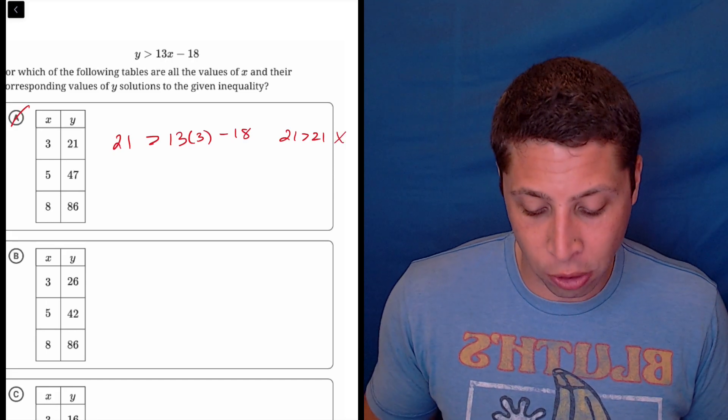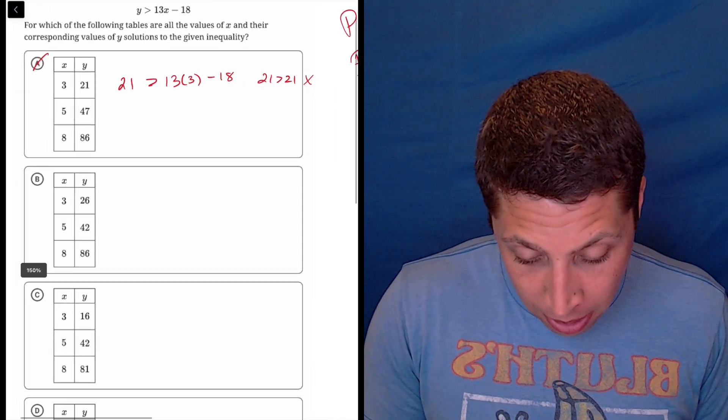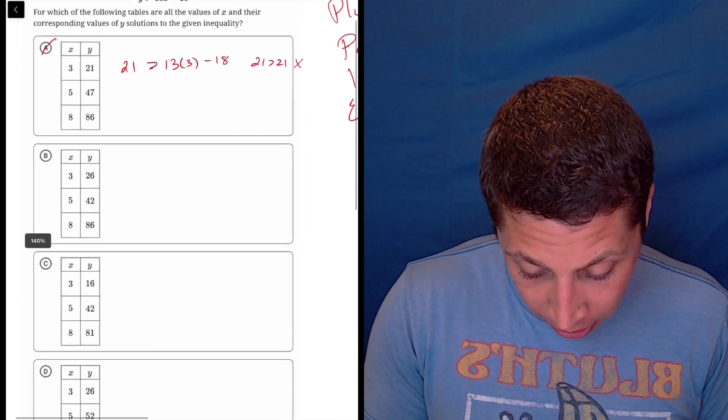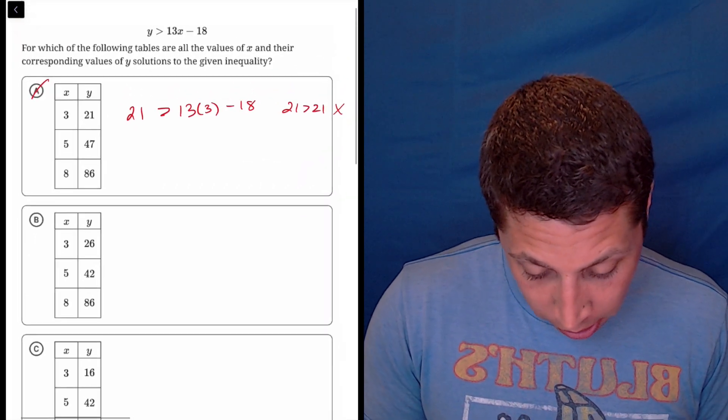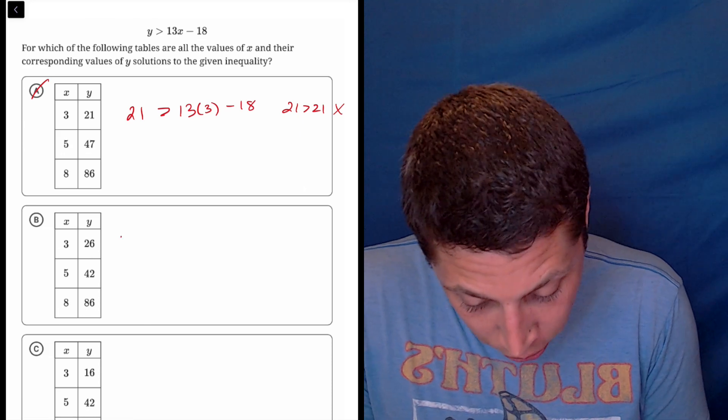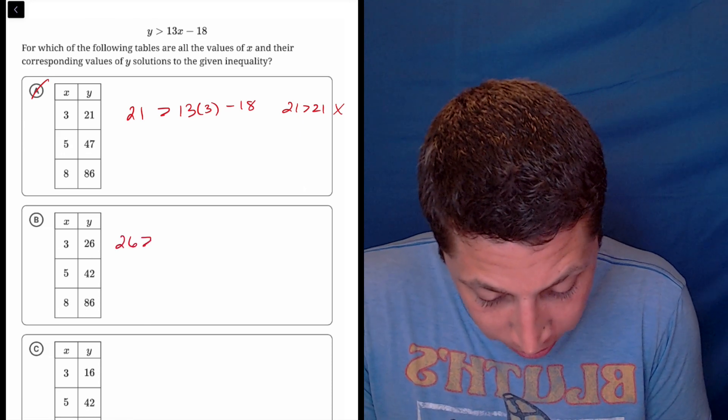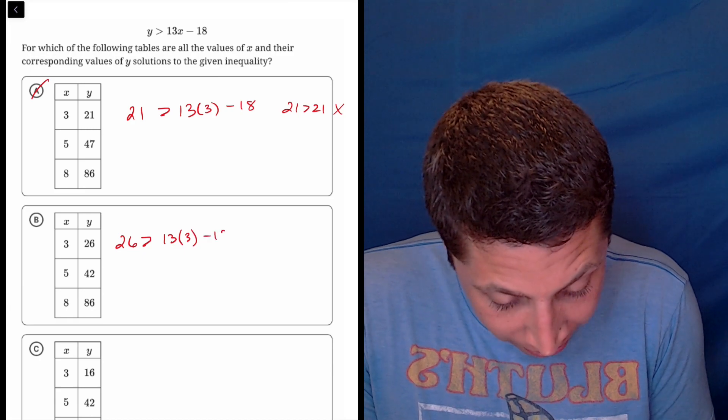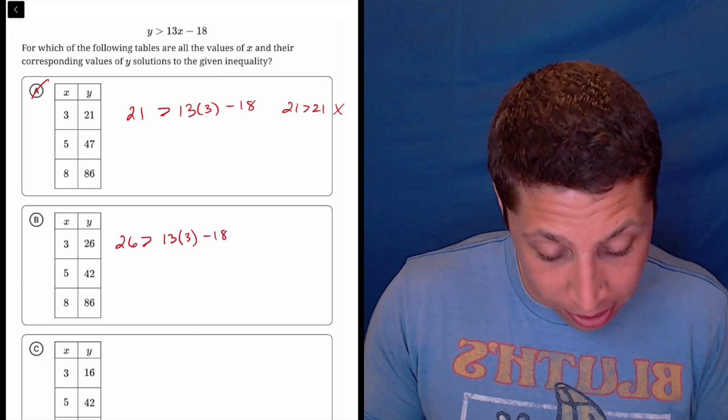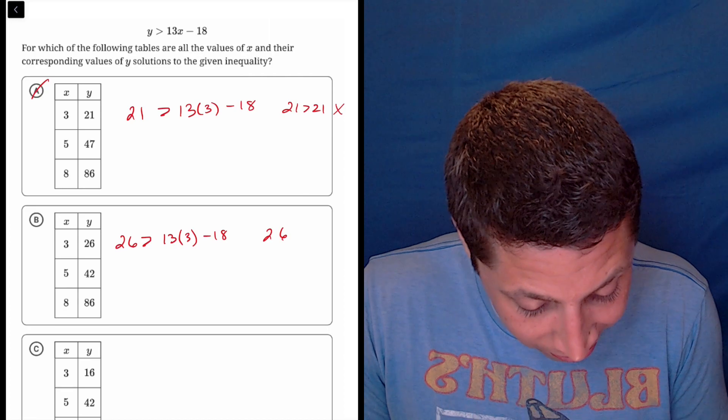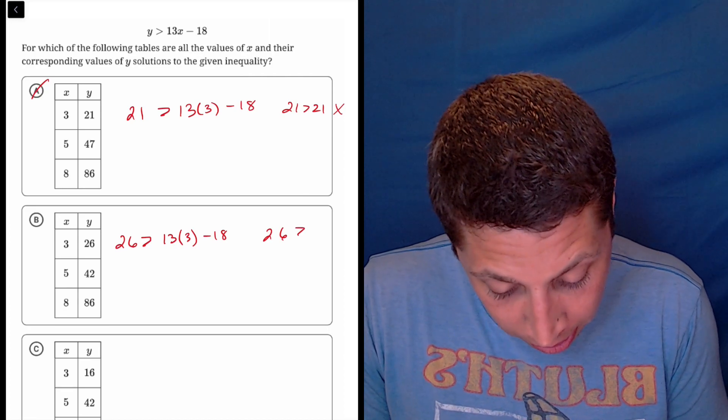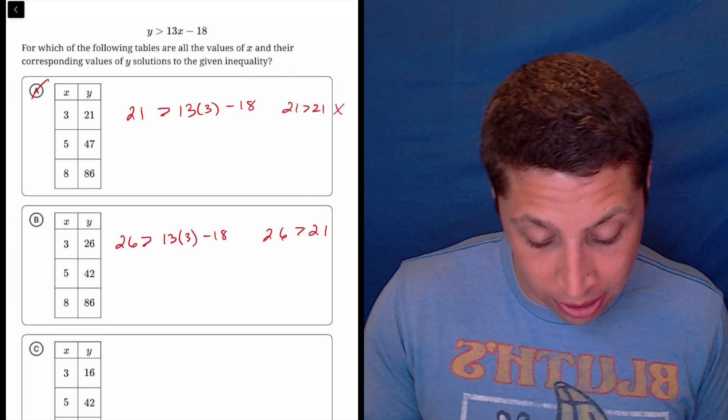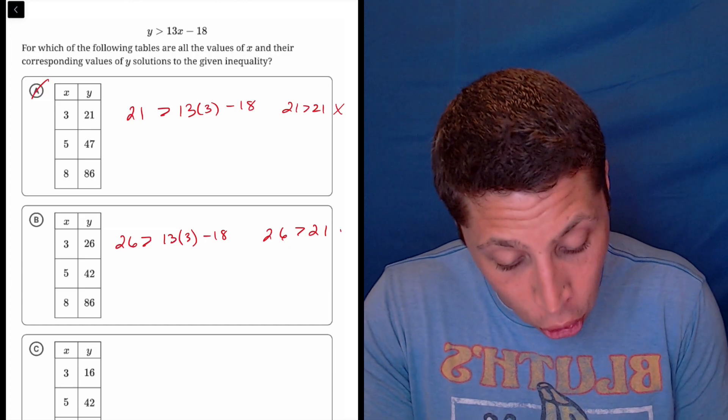So I don't need to check the other points in this choice. I can go on to another. I guess I'm going to do the 26. Let's just keep going in order. So I would have 26 is greater than 13 times 3 minus 18. So 39. This hasn't changed. Now it's 26 is greater than 21. Right? 13 times 3 minus 18 is still the same. So that seems good.